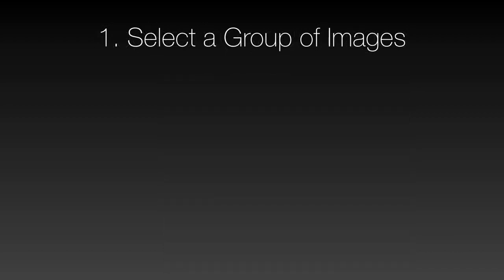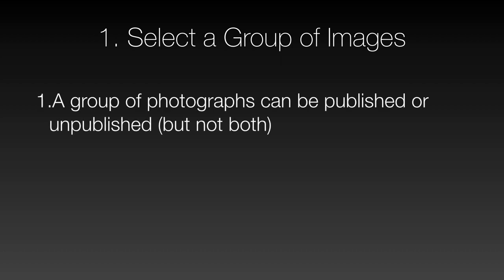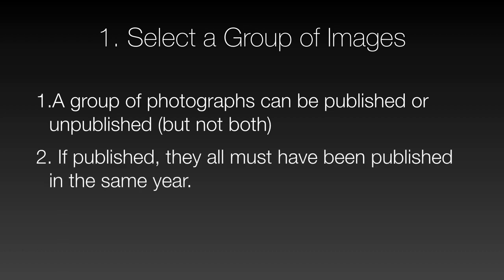The first step is to select the group you want to register. Unfortunately, this part is going to be a little more complicated, but it's a fairly important step because there's one problem: you can register a group of photographs that have been published, or a group that have been unpublished, but you can't register them at the same time. And if published, they all must have been published in the same calendar year. So of course that begs the question — what does it mean by published?